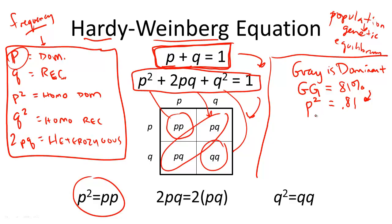If p squared equals 0.81, it's pretty easy to solve for p. p equals 0.9. So take the square root of both sides to get 0.9.